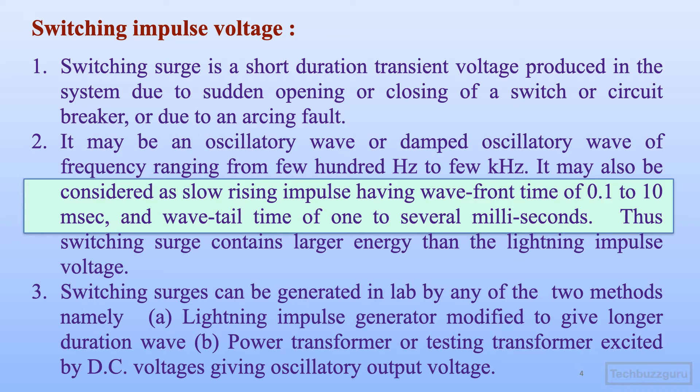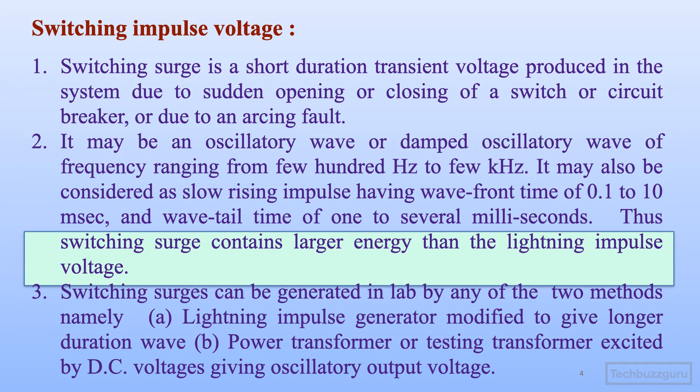Thus the switching surge contains a larger amount of energy when compared with the lightning impulse voltage. If you recollect, the lightning impulse voltages have rise time of 1.2 microseconds and fall time of 50 microseconds. With the same peak amplitude, switching surges have rise time and wavetail time in the range of several milliseconds. That's why the energy content of switching surge is higher than the lightning impulse.